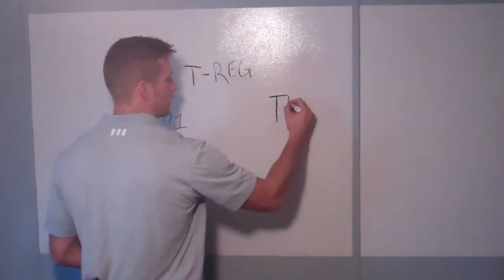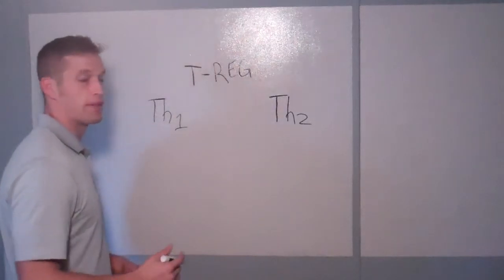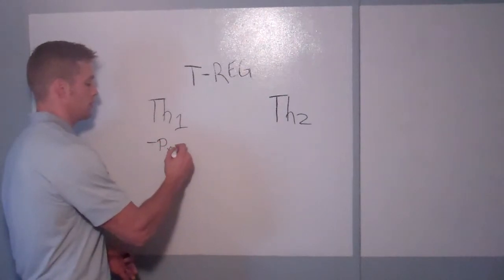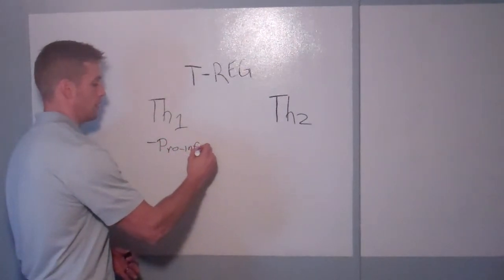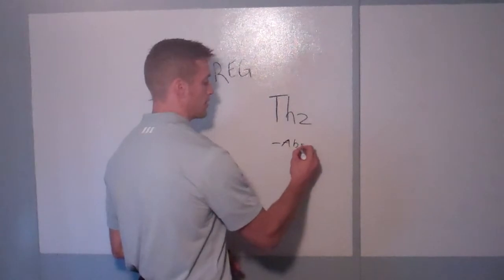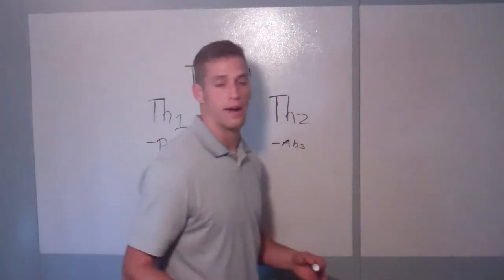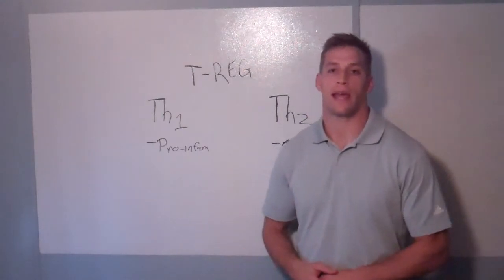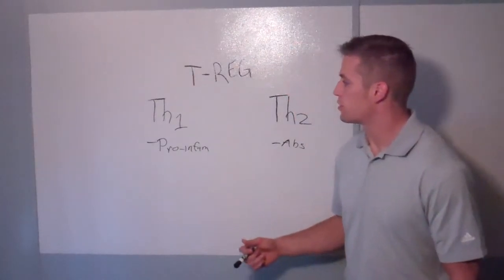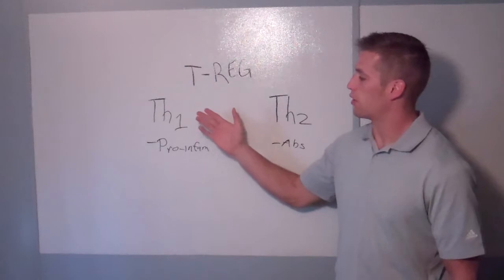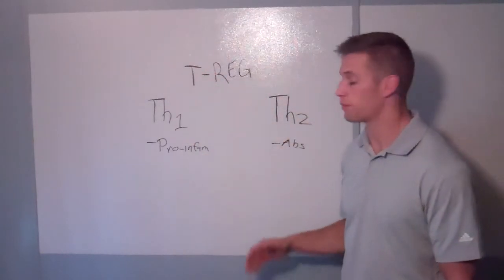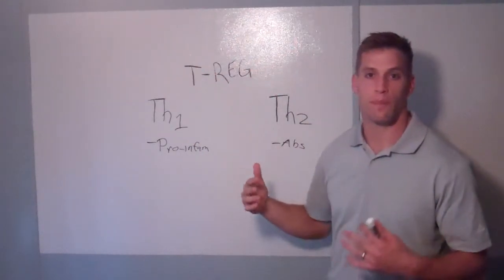The TH1 side is your pro-inflammatory side of your immune system, generally speaking. Your TH2 side is your antibody side — this is the side that creates antibodies when you are exposed to viruses, bacteria, or any sort of antigen causing an immune response. In a normal healthy immune system, T regulatory cells are managing the balance between TH1 and TH2. Sometimes it's healthy to have TH1 go up, sometimes TH2 — when they function in balance, that's healthy.